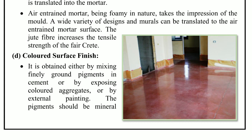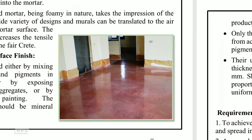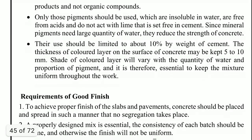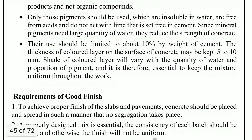Colored surface finish is obtained either by mixing finely ground pigments in cement or by exposing colored aggregate. Color can also be achieved by using colored cement or by external painting. The pigments should be mineral products and not organic compounds.